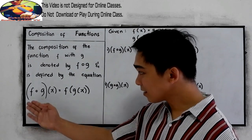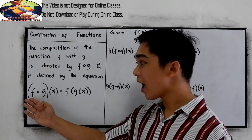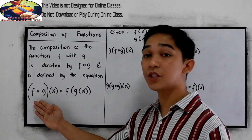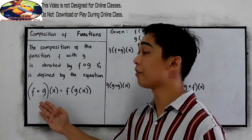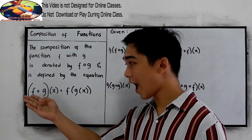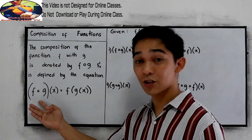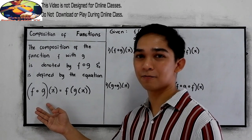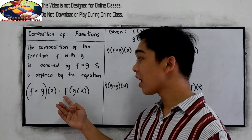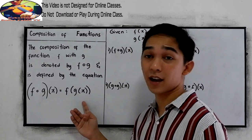Again, this is read as f composed of g of x, which is equal to f of g of x.